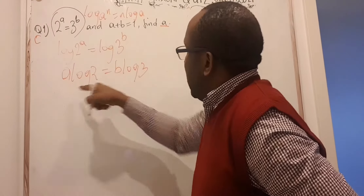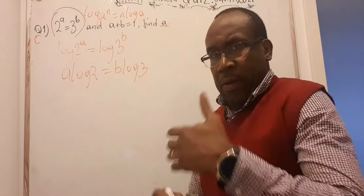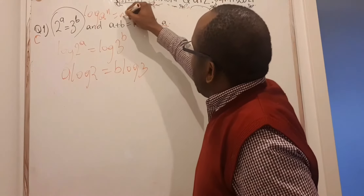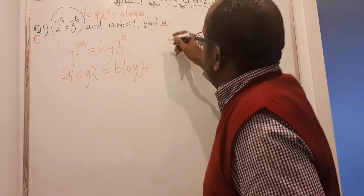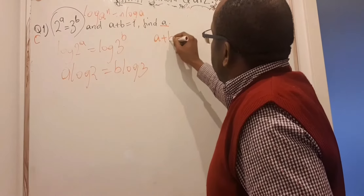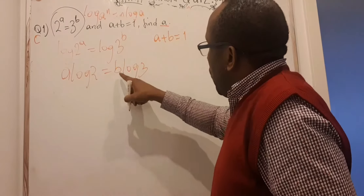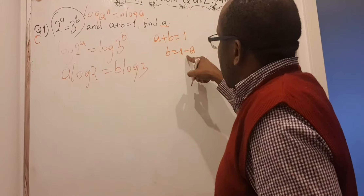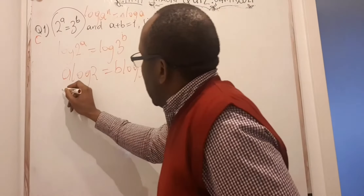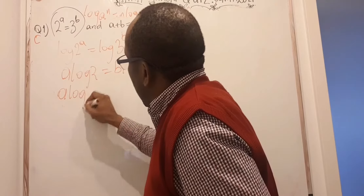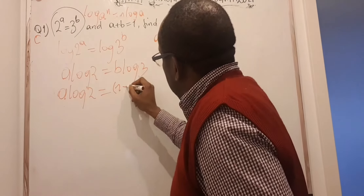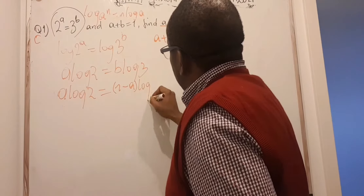I've been asked to find a, so I have to make sure that b goes away — not just disappears, but converts itself mathematically. There was extra information given: a plus b equals 1. So if I don't want b here, I make b the subject: b = 1 minus a, and substitute it. Then I get a·log 2 equals, in the place of b, (1 minus a)·log 3.